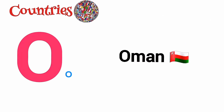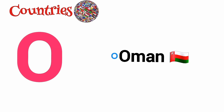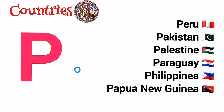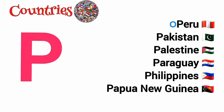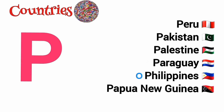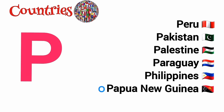O is for Oman. P is for Peru, Pakistan, Palestine, Paraguay, Philippines, Papua New Guinea.